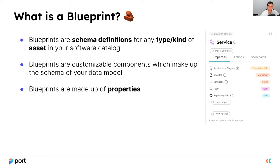Let's explain what a blueprint is. Blueprints are schema definitions for any type or kind of asset in your software catalog. Blueprints are customizable components which make up the schema of your data model, and blueprints are made of properties. You can think of a blueprint as a schema for a table in a database — you can add all the different columns you want, called properties. It should support all the major types, from standard primitives like strings, numbers, and booleans, all the way to arrays, the ability to embed Markdown, embed users from within the portal, and also embed iframes to get the most customizable and tailored schema for your organization.